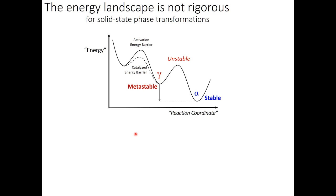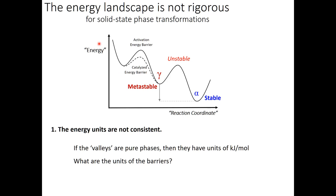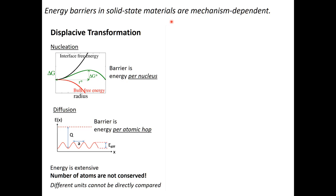I'd like to propose that the energy landscape description is not a good starting point—it's not rigorous. Starting with the y-axis: if this were truly an energy eigensurface, the valleys are pure phases with units of kilojoules per mole. But what are the units of the barriers? Kinetic barriers depend on the mechanism. For a nucleation transformation, the barrier is energy per nucleus, where the nucleus can be 50, 100, or 1000 atoms, and the barrier scales with the number of atoms.